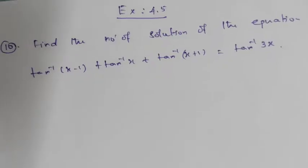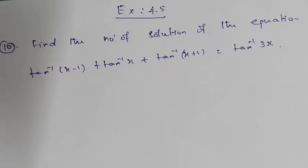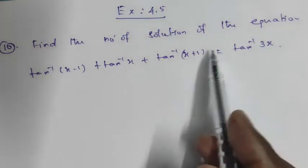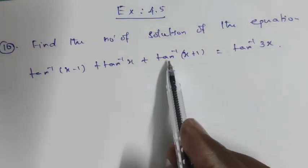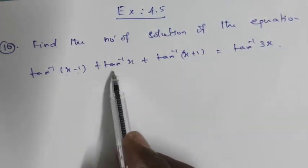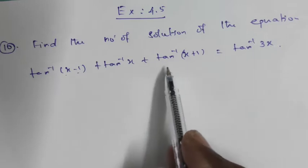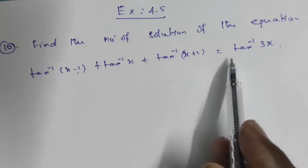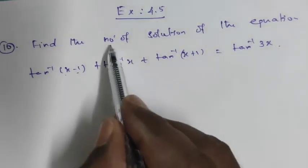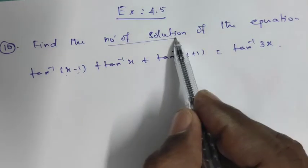Hi students, welcome to my channel. This is Exercise 4.5, question number 10. Find the number of solutions of the equation: tan inverse of (x minus 1) plus tan inverse of x plus tan inverse of (x plus 1) equal to tan inverse of 3x. Find the number of solutions.